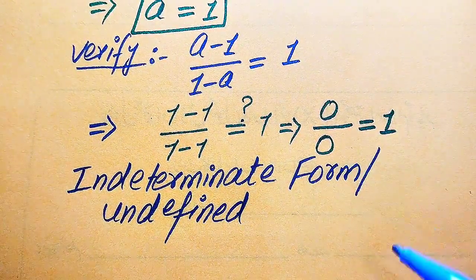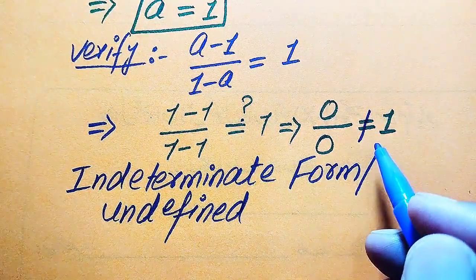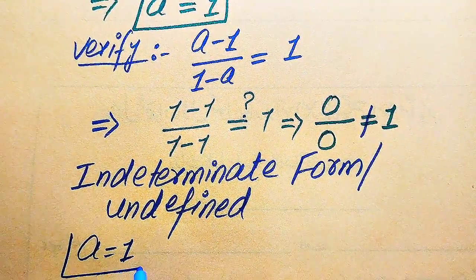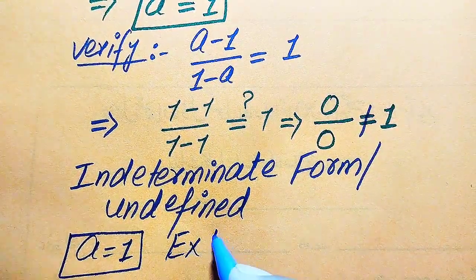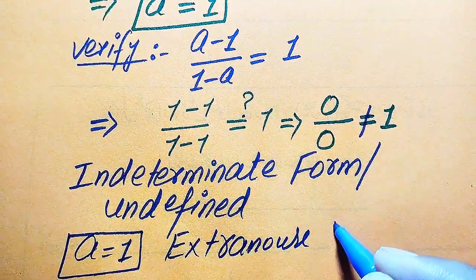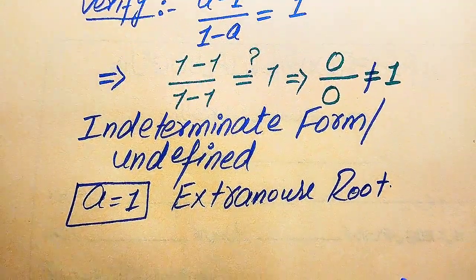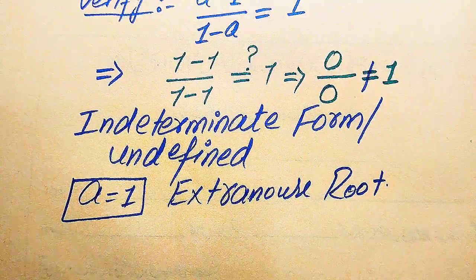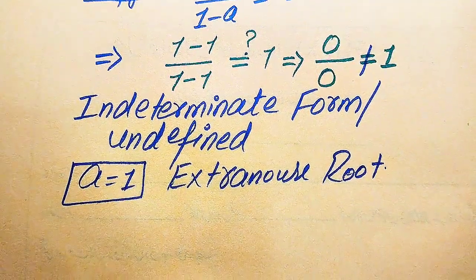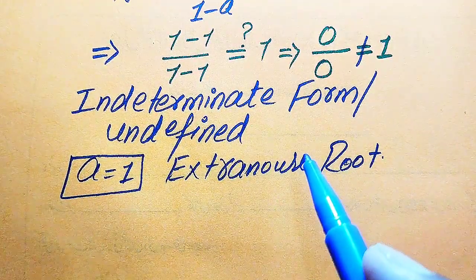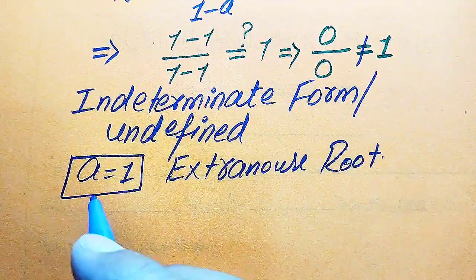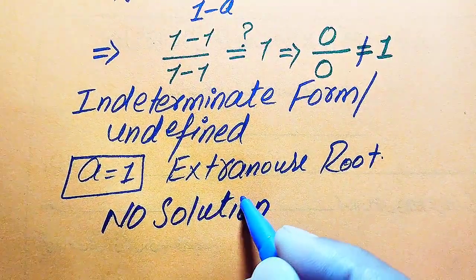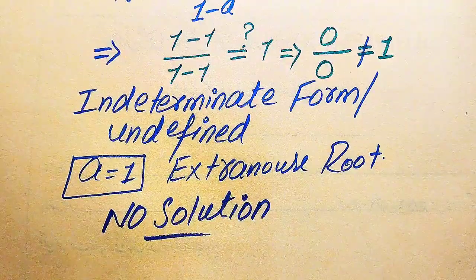Since the left-hand side is undefined, both sides are not equal. Therefore, a equals 1 is an extraneous root of the given equation. Extraneous roots are roots that do not satisfy the original equation. Since we cannot get any other value of a that satisfies the equation, this question has no solution.